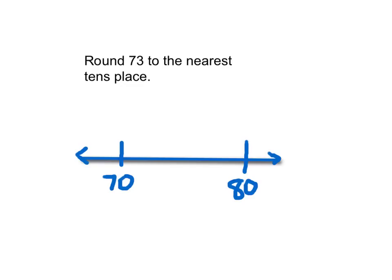It might help us to make a number line and place 73 on it. Halfway between 70 and 80 would be 75, so 73 is about here on the number line. We're going to the nearest tens place, so we're either going to go to 70 or 80. And 73 is closer to 70 than it is to 80, so the answer is 70.